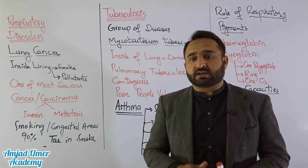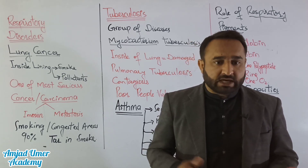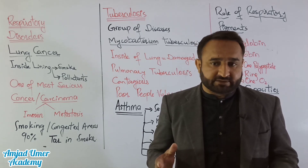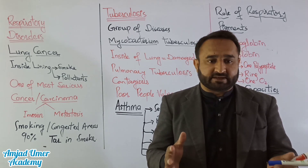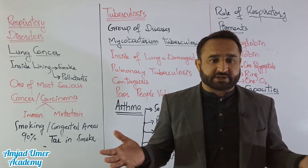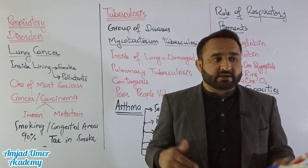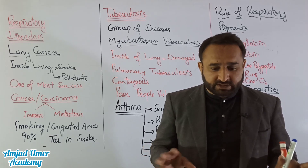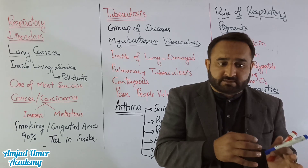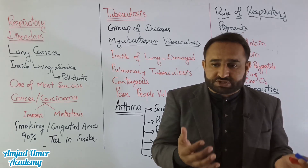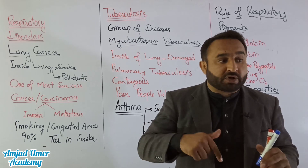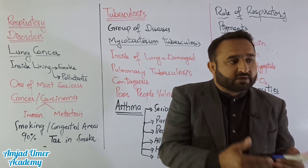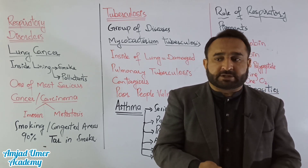Cancer means uncontrolled cell division. In our body, cell division is a controlled mechanism — it is predetermined when and how many times a cell will divide, determining our height and body form. If this control is disturbed due to a mutation, the somatic cells of the body start dividing uncontrollably, which is called proliferation.